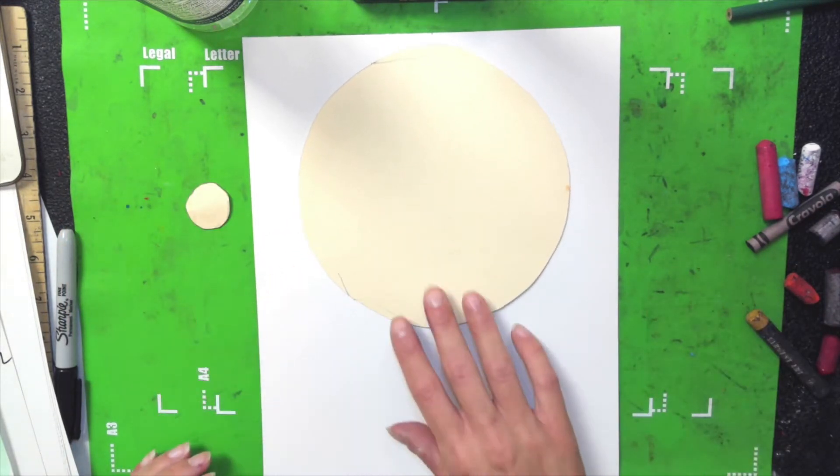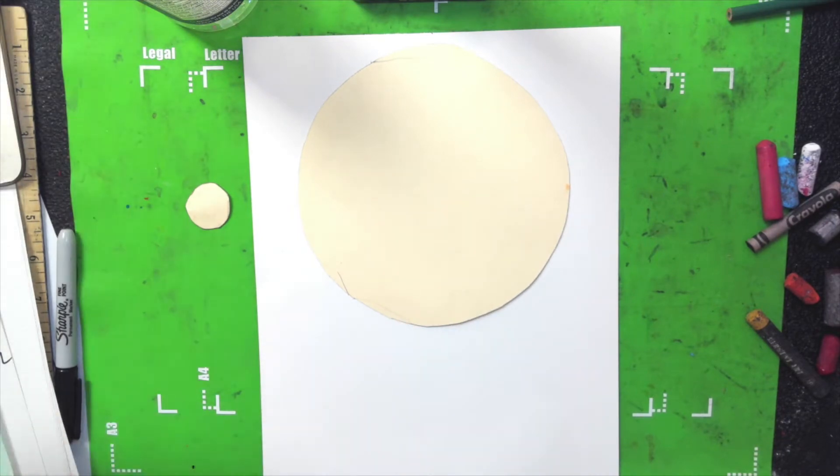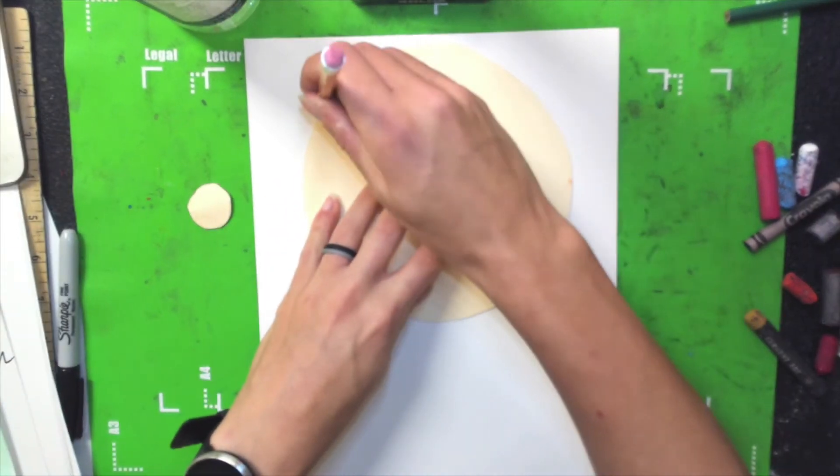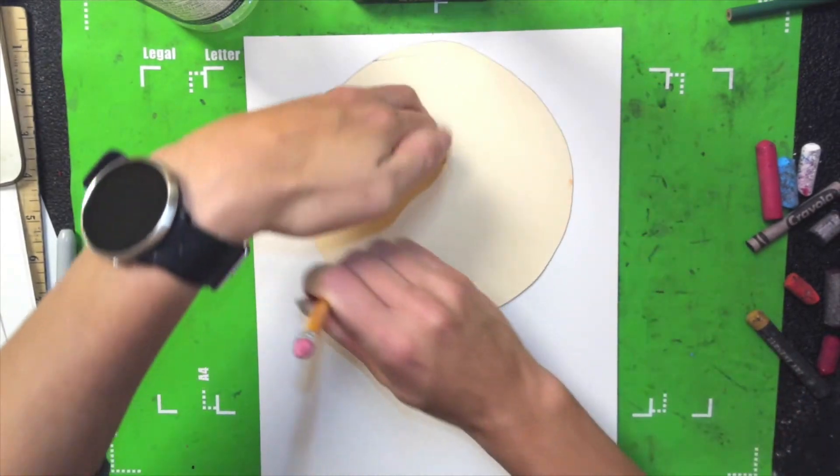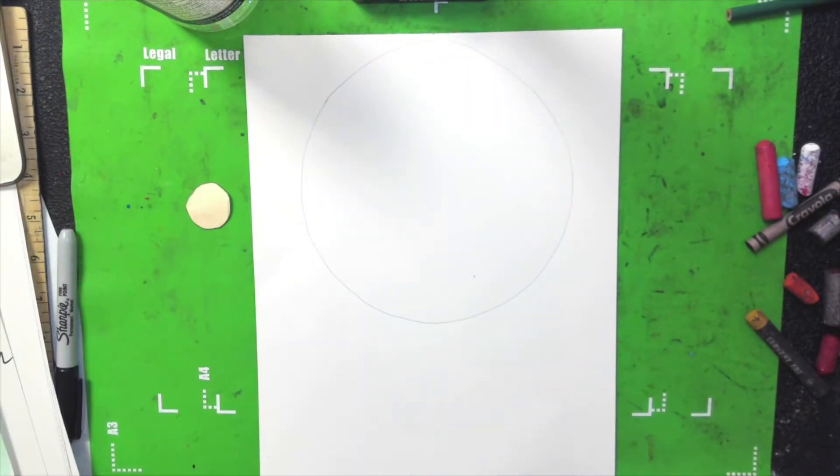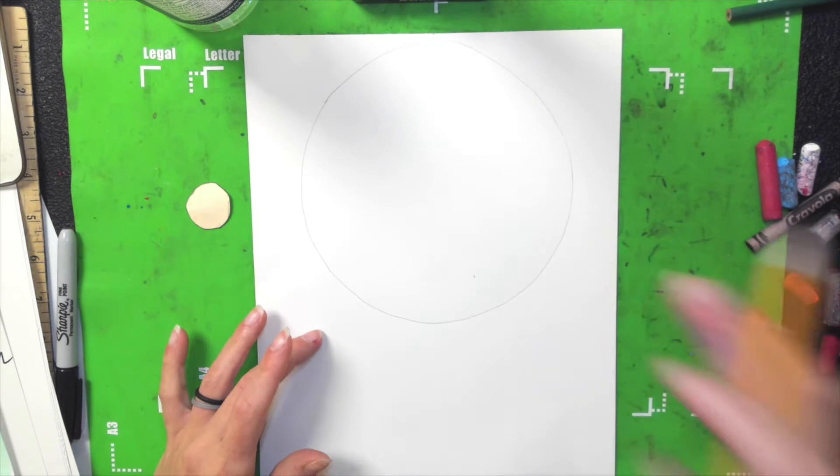First thing we're going to do is have our paper or our big circle towards the top of our paper and trace. Then you're done with it. So now we have the main part of the gumball machine.